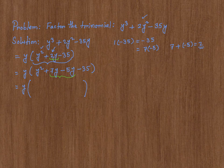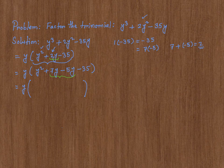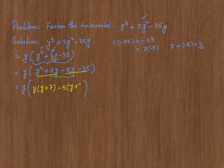If I factor out y between the first two terms, I get y times y plus 7. And between the second two, if I factor out negative 5, I get y plus 7.